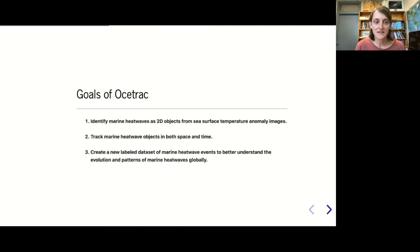The goals of OAStrack: we want to identify marine heat waves not at a single point but look at an image of the ocean from sea surface temperature and identify them as 2D objects. Once we have those objects, we want to follow them in time and space to track them, and curate a new dataset with rich spatial temporal information to better understand these events and how they'll change in the future.